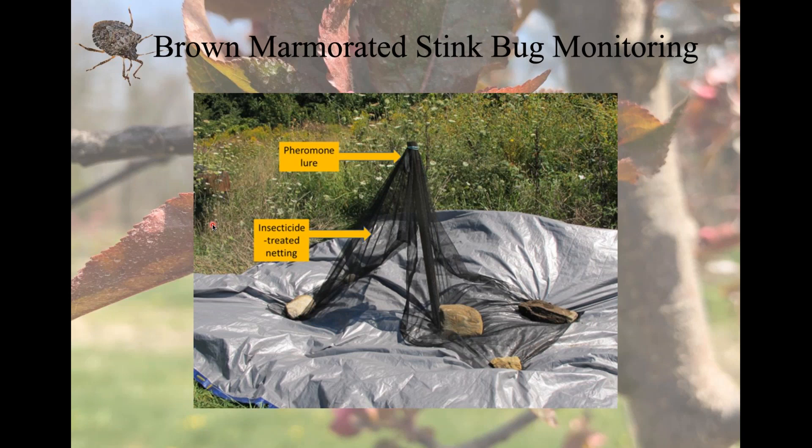The other trap we've started to use is the ghost trap. They originally called it that because it was hanging from a pole, blowing in the breeze, looking very otherworldly. It's netting impregnated with pyrethrin, set up over a stake and pinned down so it doesn't blow away, with the pheromone added. Unlike the rocket and pyramid traps, the pheromone is not contained inside anything, so we're drawing stink bugs in at a greater rate. These bugs are good flyers — they can go up to 70 miles a day. They land on the net, come into contact with the insecticide, die, and fall to the bottom where we count them.